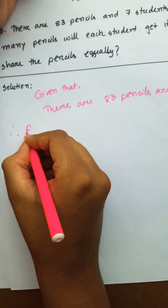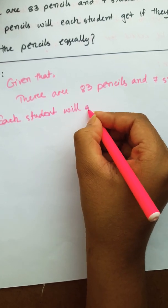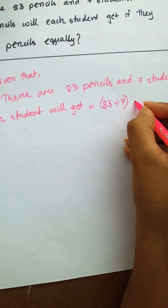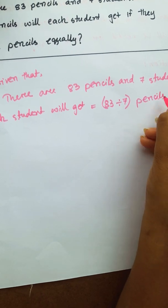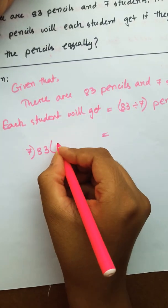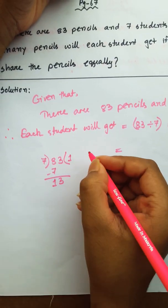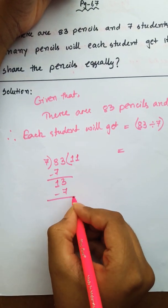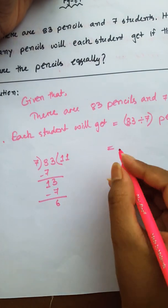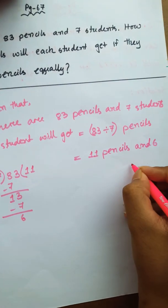Therefore, each student will get 83 divided by 7 pencils. 7 goes into 8 once — 7. 7 goes into 13 once — 7. And 6 remaining.